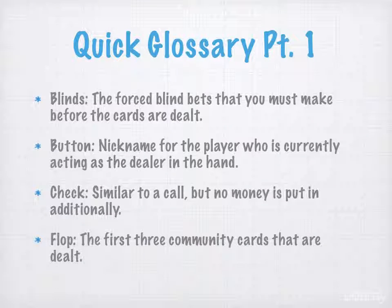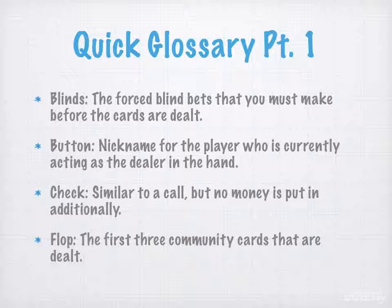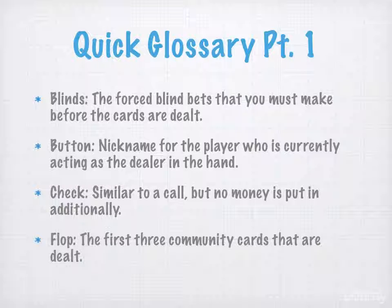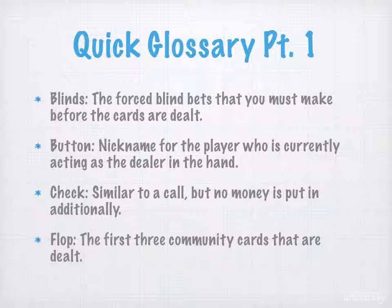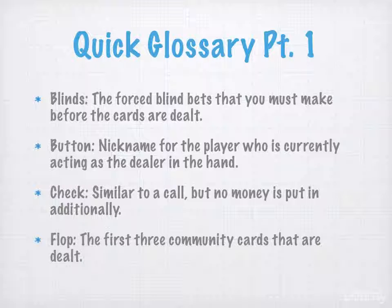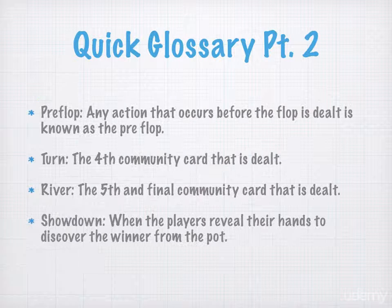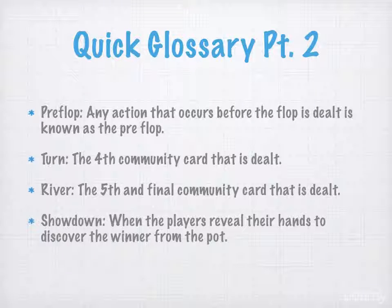The player with the dealer button has the best position from the flop, turn, and river cards — we'll jump into a lot of that later on. The word 'check' refers to something similar to a call, but no money is put in additionally. So if you have the big blind and the action is on you and there are no raises around you, you can simply check to see the flop or community cards. A 'flop' is the first three community cards that are dealt.